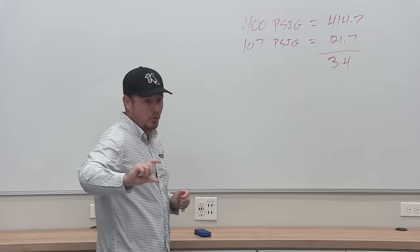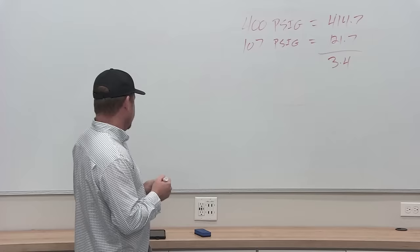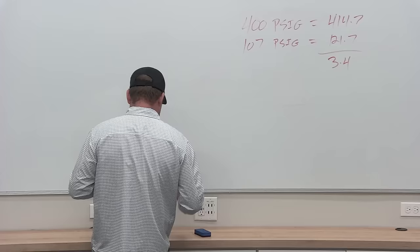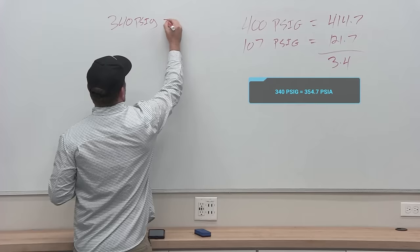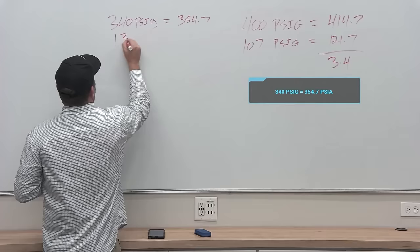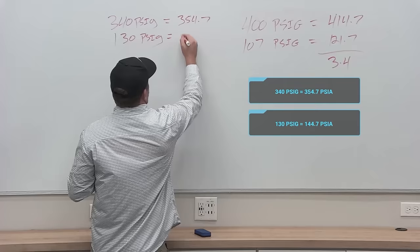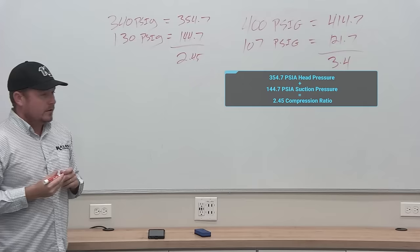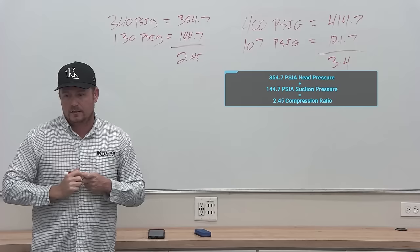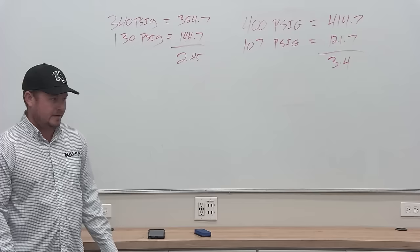On modern high efficiency systems at the edges of what you can see, you'd have 340 PSIG head — 354.7 PSIA — and 130 PSIG suction — 144.7 PSIA — giving a compression ratio of 2.45. With 2.3 being the lower limit you're generally going to see. If you start to get below that, that's actually a sign of a problem, which we'll talk about.